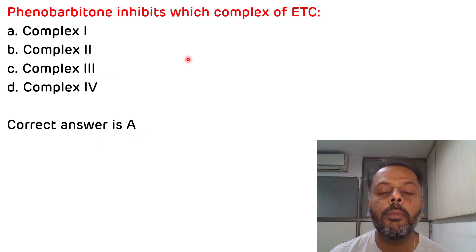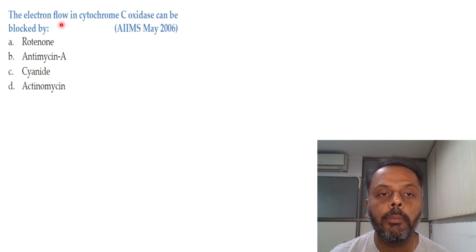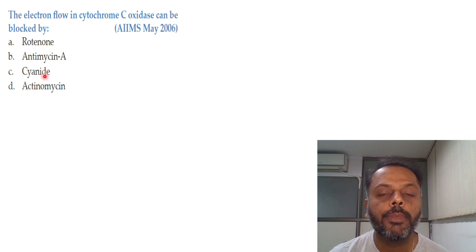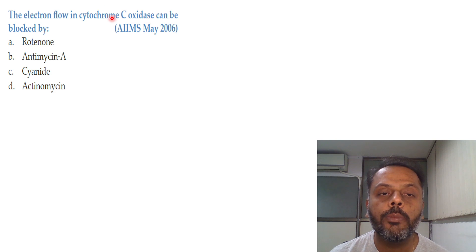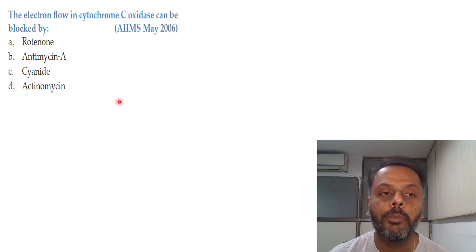A similar question: electron flow in cytochrome C oxidase can be blocked by — options are rotenone, antimycin A, cyanide, and actinomycin. Electron flow in cytochrome C oxidase, that is complex 4, can be blocked by cyanide. Other inhibitors of complex 4 are hydrogen sulfide and carbon monoxide. The correct answer is cyanide.